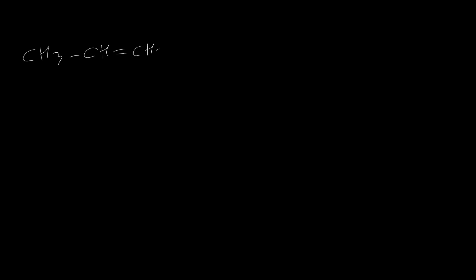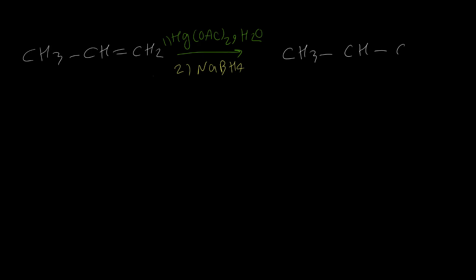Let's look at some examples for these reactions. For the first reaction, we have propene reacting with mercury acetate, water, and sodium borohydride. We need to write everything in the product. Instead of the double bond, we have a single bond. Then on the more substituted carbon, we put OH, and on the less substituted carbon, we put H. CH2 and H becomes CH3, so we just write CH3 there. This is the product for the first example.